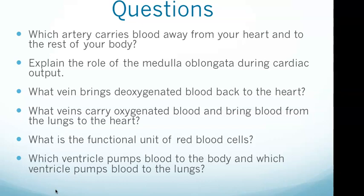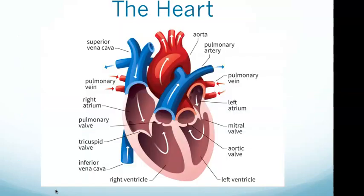If you have a good understanding of those, you're in solid shape for this section. Starting with the heart, the four muscular chambers are the right and left atria and the right and left ventricles. At the bottom you can see the right ventricle and the left ventricle.